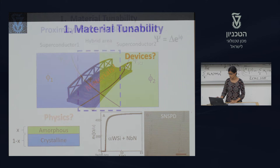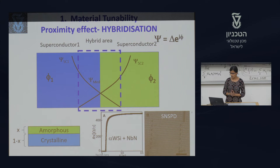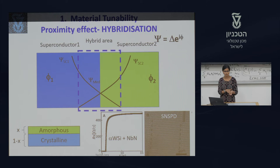We take one superconductor with a coherent wave function, and because of the proximity effect — that is, by putting two superconducting materials together — we can tune the wave function of one material by tuning the wave function of the other material.